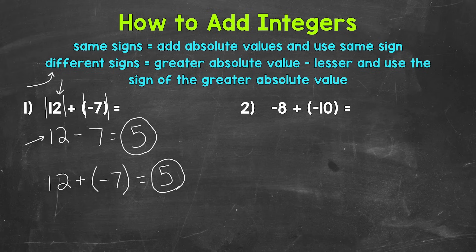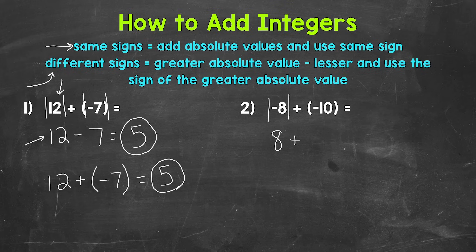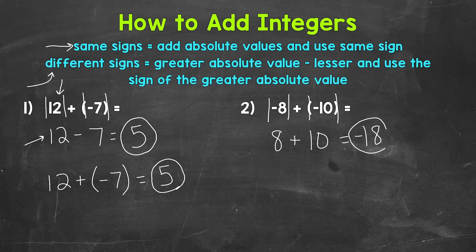Let's move on to number 2 where we have negative 8 plus negative 10. Here we have two negatives — the same signs. So we are going to add the absolute values and use the same sign. The absolute value of negative 8 is 8, plus the absolute value of negative 10, which is 10. We add those absolute values because we have the same signs: 8 plus 10 is 18. We use the same sign from the original problem, which is negative. Final answer is negative 18.